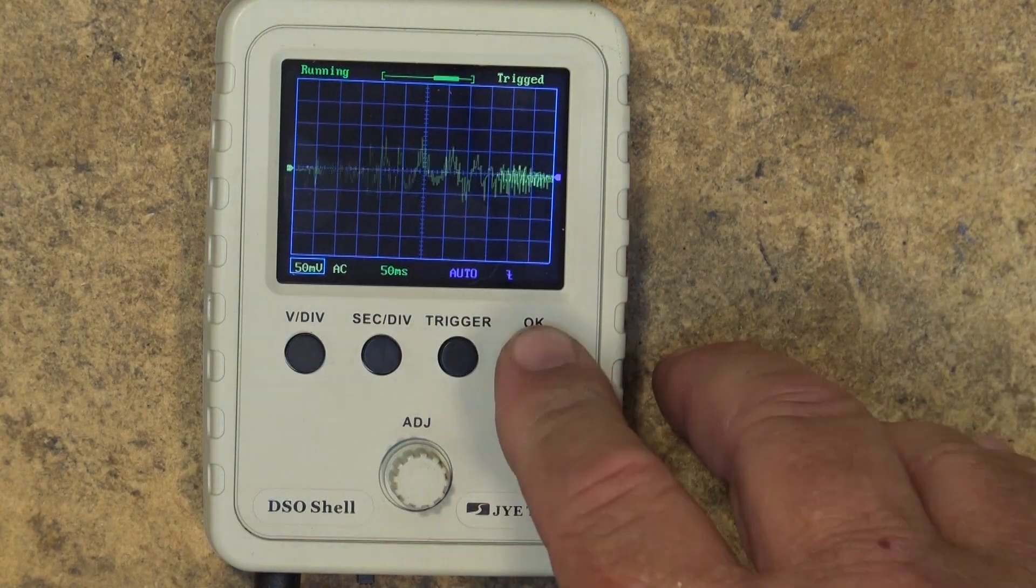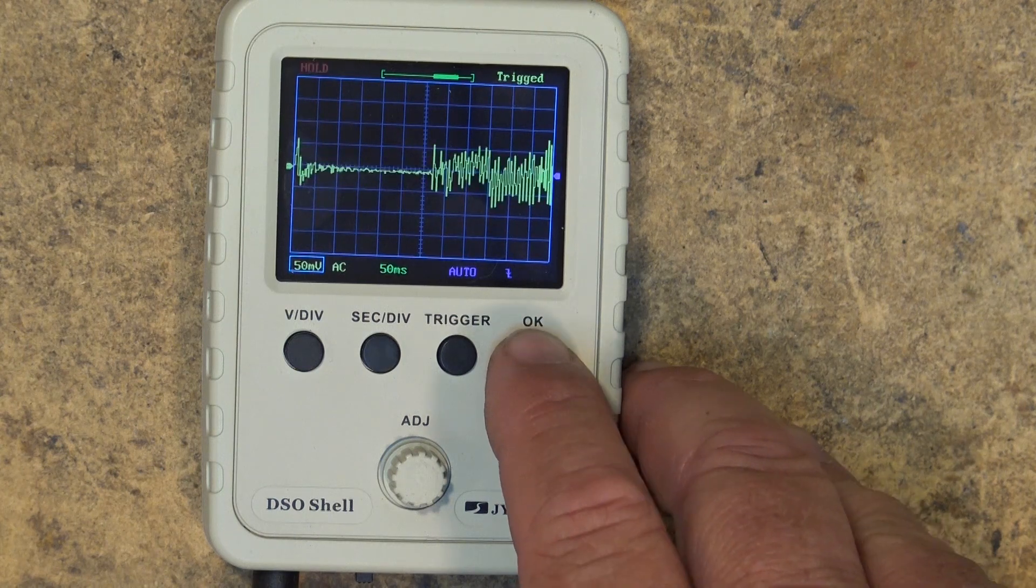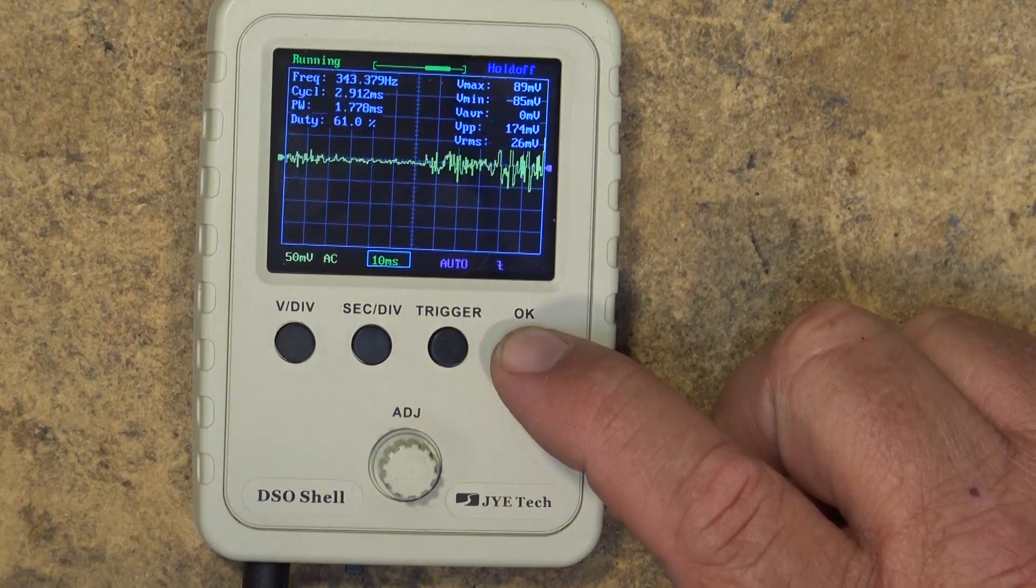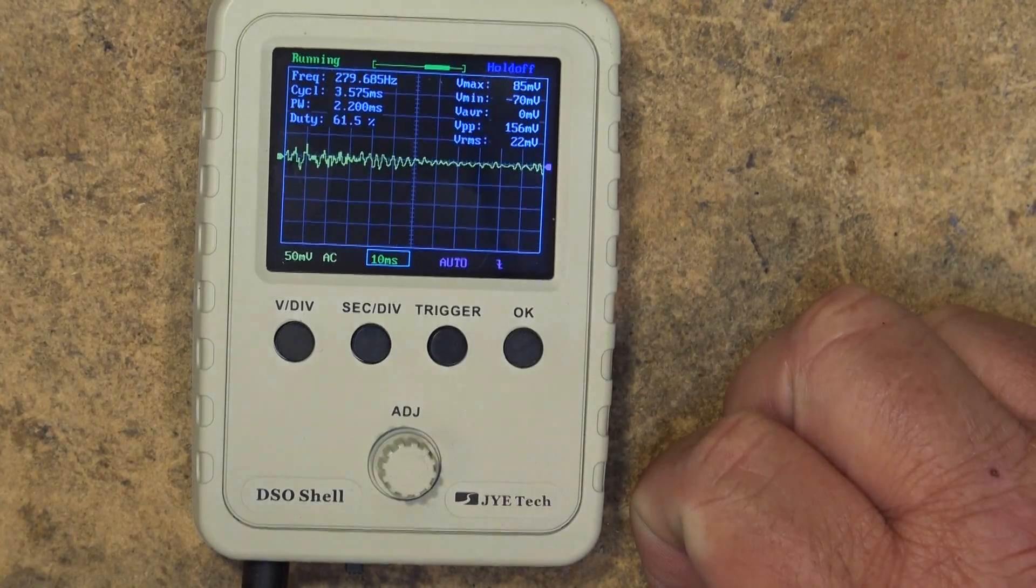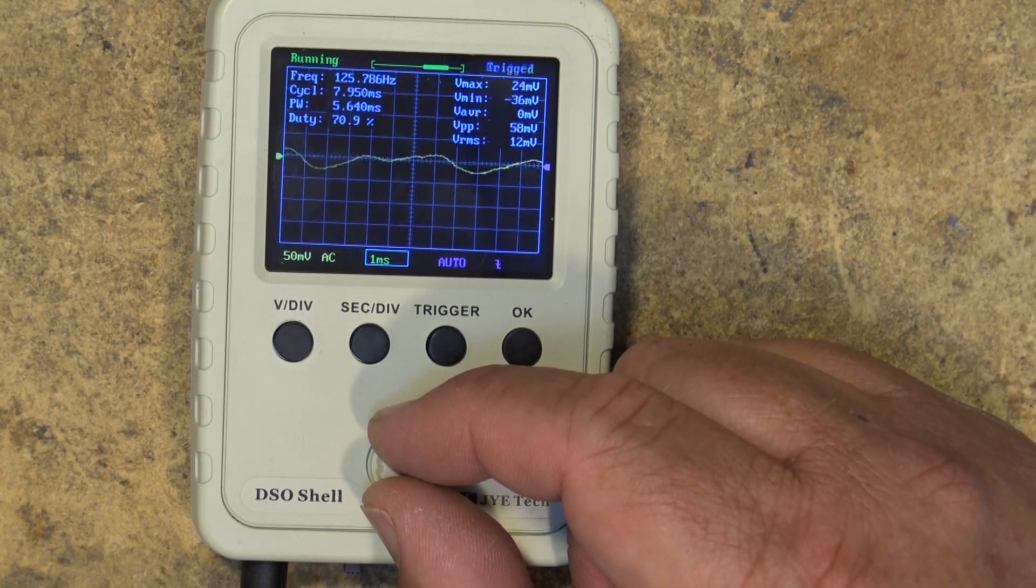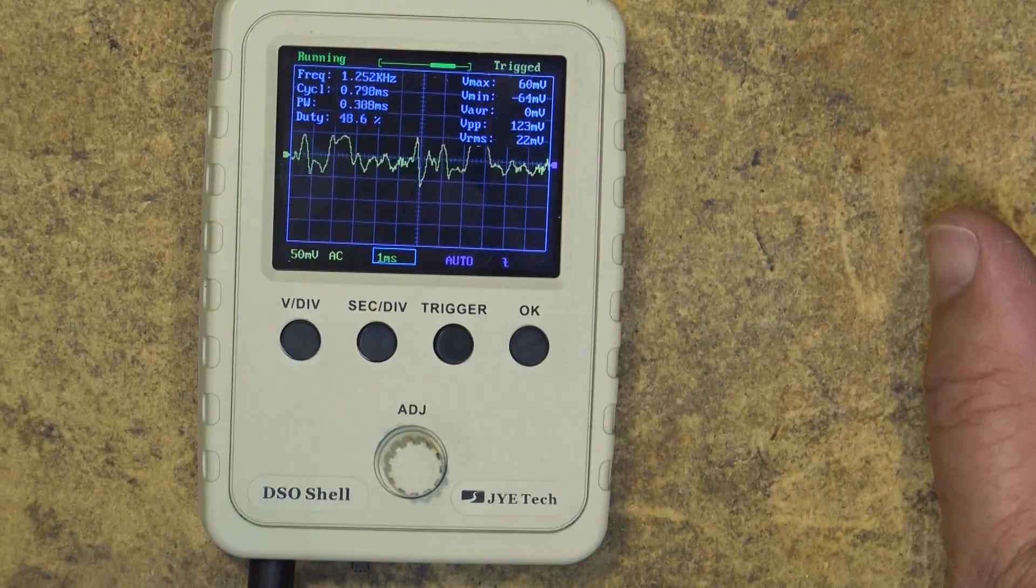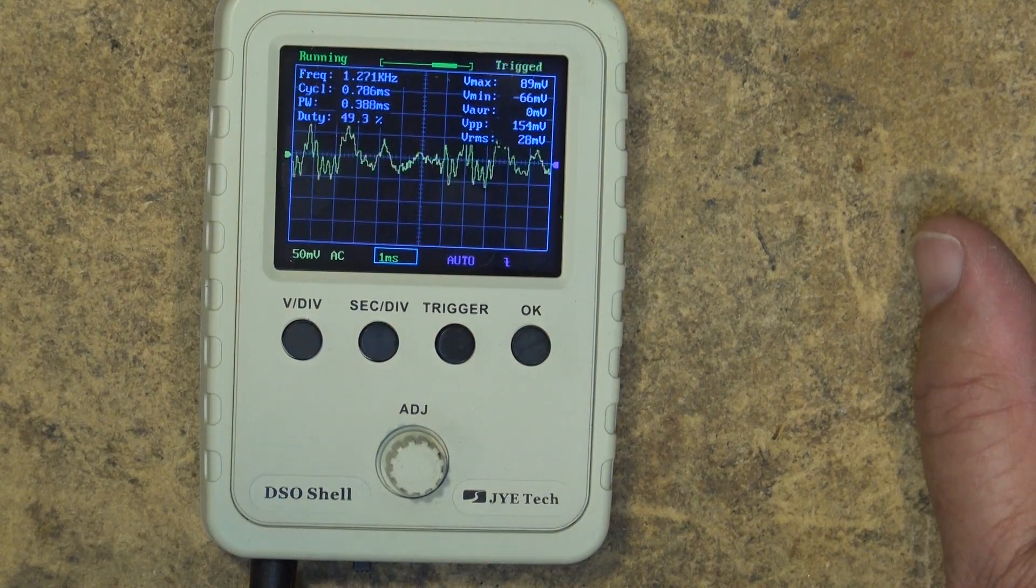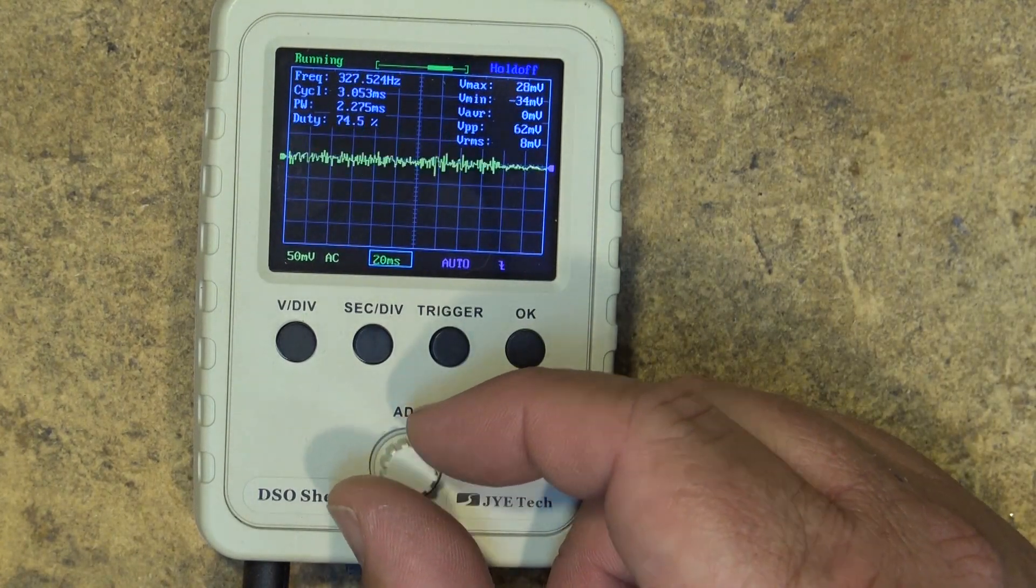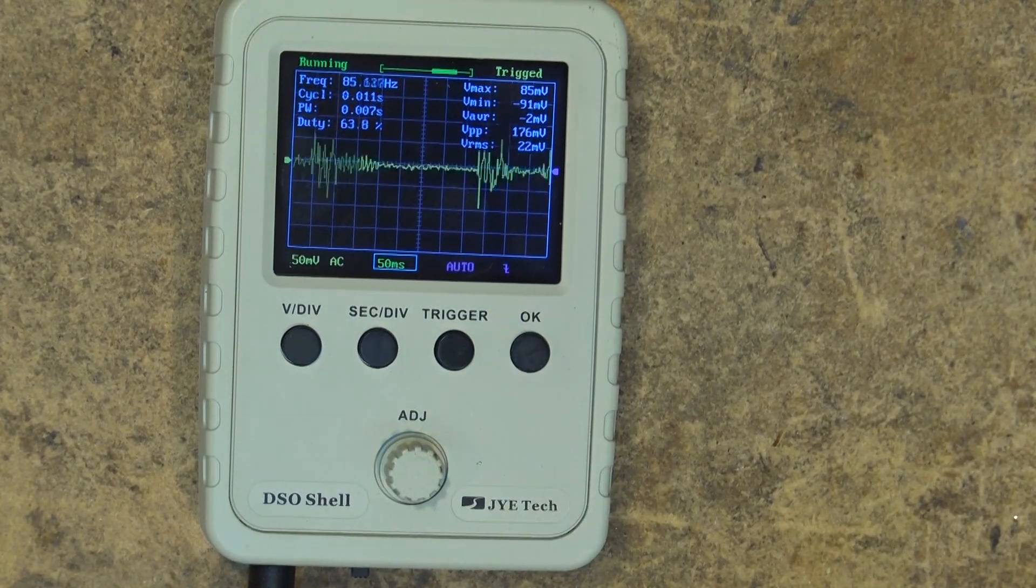Now it becomes a rolling scope. If you're looking at audio signals you can put it into rolling mode and you can still freeze your waveform. This is a one shot - it triggers and then refreshes and I can measure the actual voltage here. It's good for measuring audio signals.